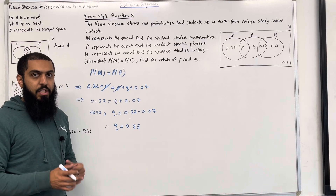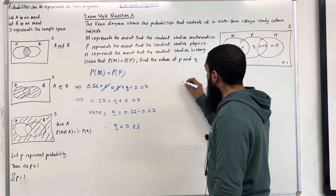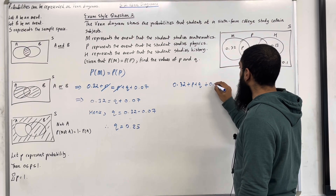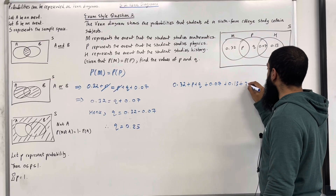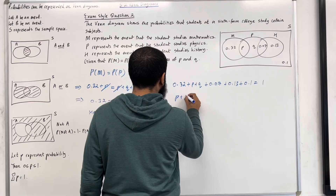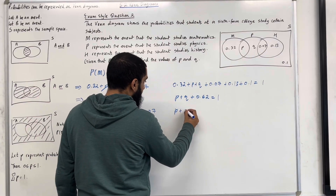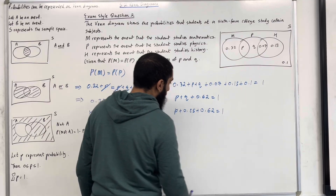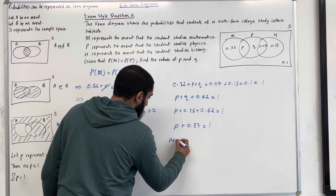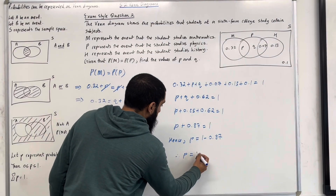To work out the value of p, we use the fact that all probabilities add up to 1. So: 0.32 plus p plus q plus 0.07 plus 0.13 plus 0.1 equals 1. Simplifying: p plus q plus 0.62 equals 1. Substituting q equals 0.25: p plus 0.25 plus 0.62 equals 1, so p plus 0.87 equals 1. Therefore p equals 1 minus 0.87, giving p equals 0.13.